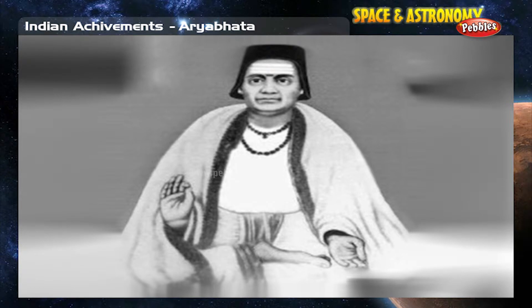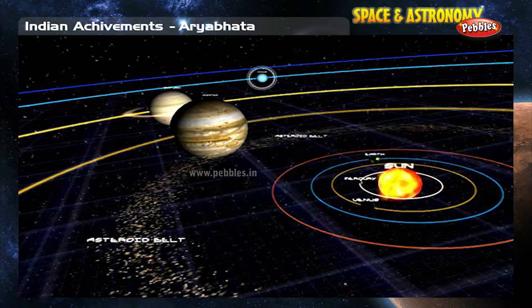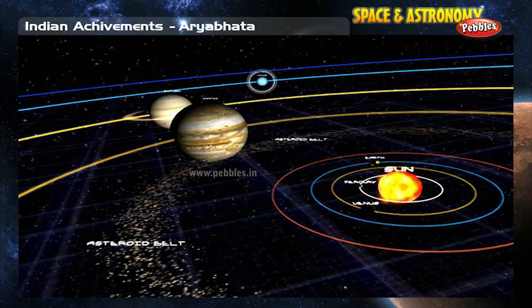Bhaskara, in 12th century AD, expanded on Aryabhata's heliocentric model in his treatise Siddhanta Shiromani, where he mentioned the law of gravity.